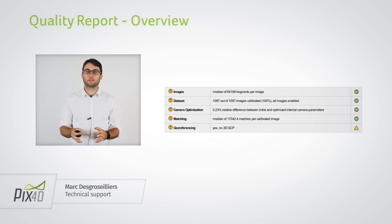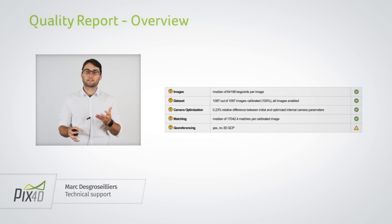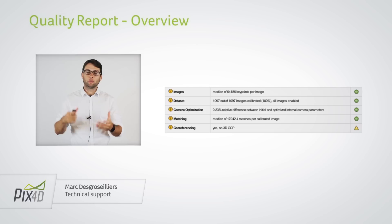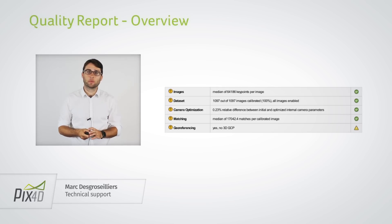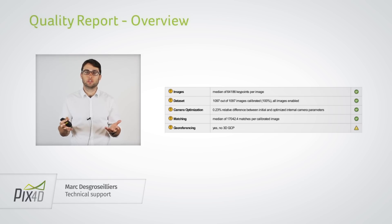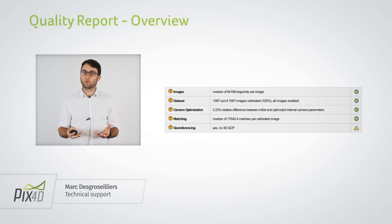As you can see, on the right you have green check marks. If you have a red check mark that is a red flag, and you want to inspect that aspect of your project. We have a support article called 'Quality Report Help' which will help you troubleshoot each section. There is also a yellow check mark in the last row because no 3D GCPs were used, but you can get very good projects without them. However, if it's red, you should look at the Quality Report Help support page.